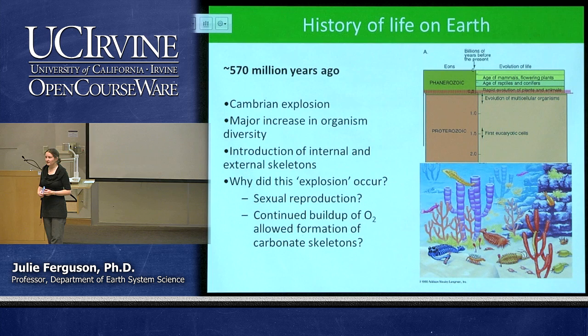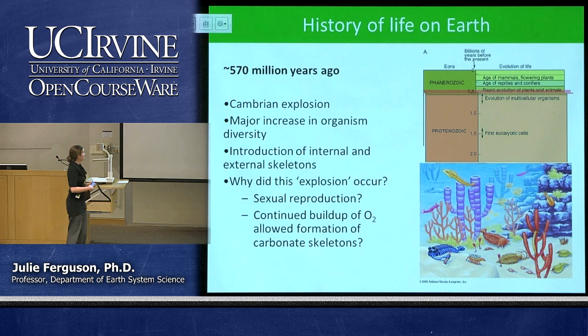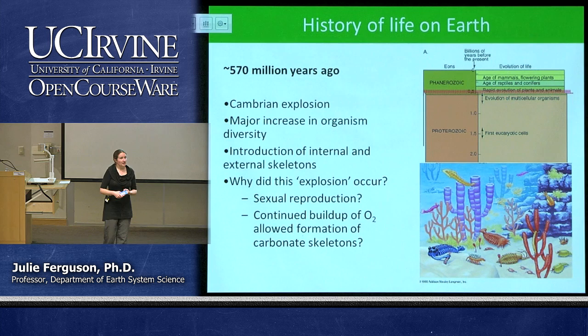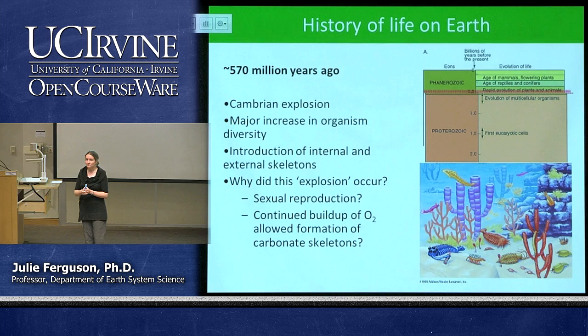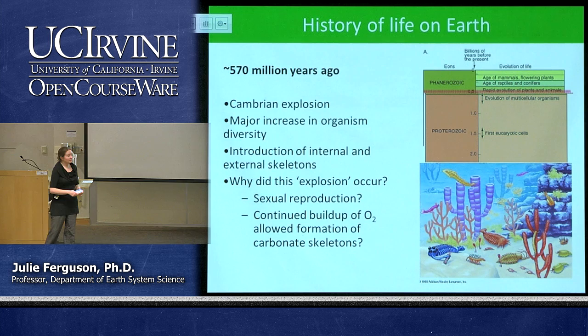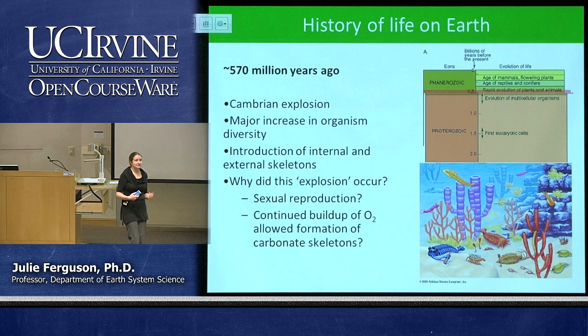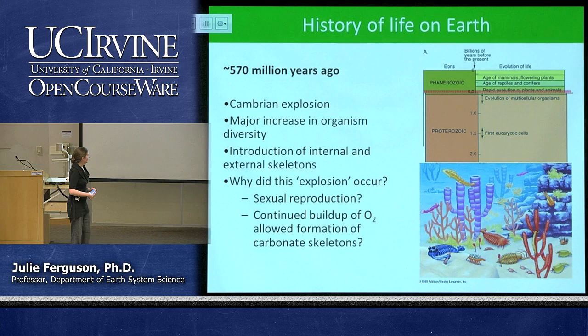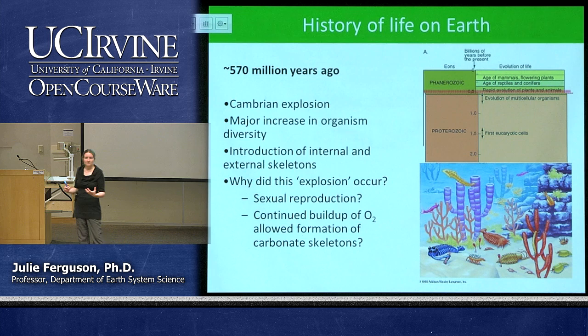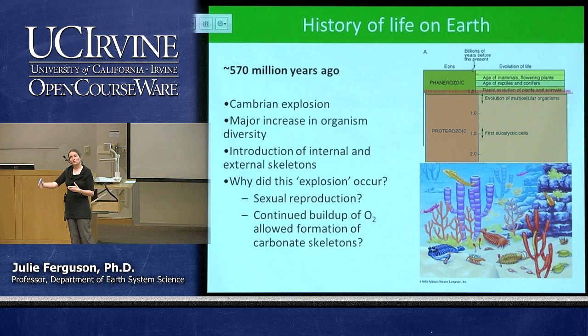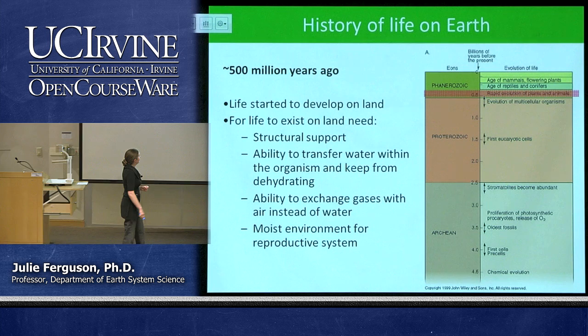The really interesting question is why the Cambrian explosion happened at this particular time. Possible reasons include: sexual reproduction, which increases genetic diversity and speeds up evolution; and oxygen building up to the point where organisms could form calcium carbonate shells or phosphate skeletons. It's really from this point on that we start to see hard parts — skeletons, internal or external — in our animals. So now we get a much more complete fossil record with much more preserved through time.